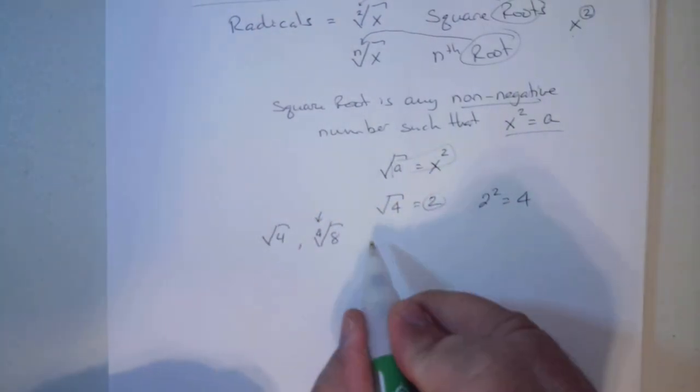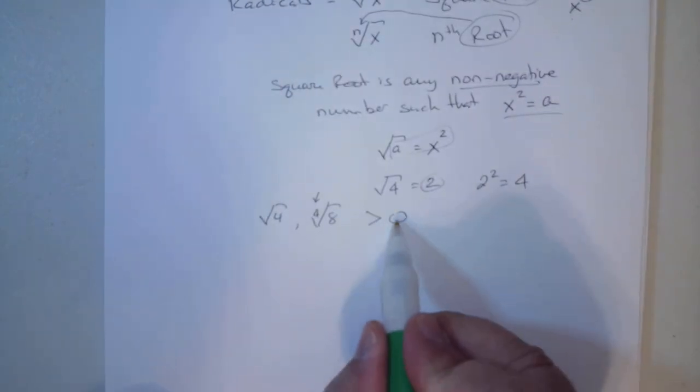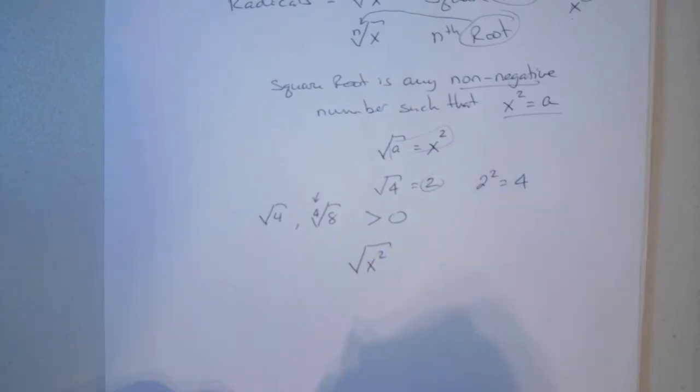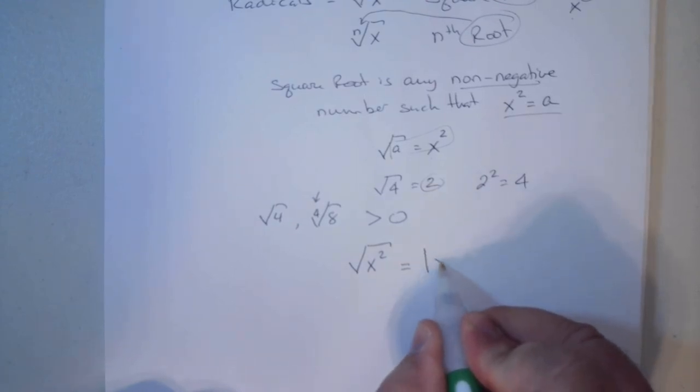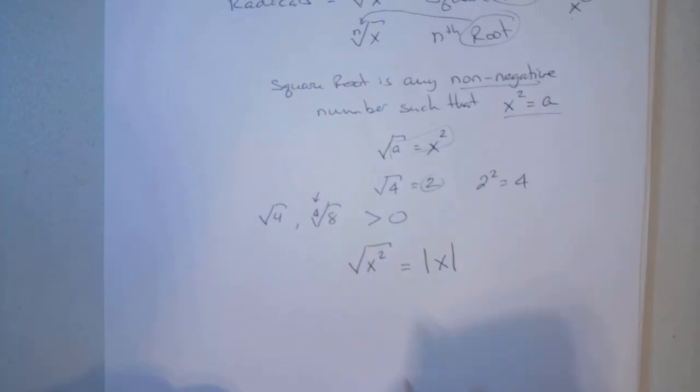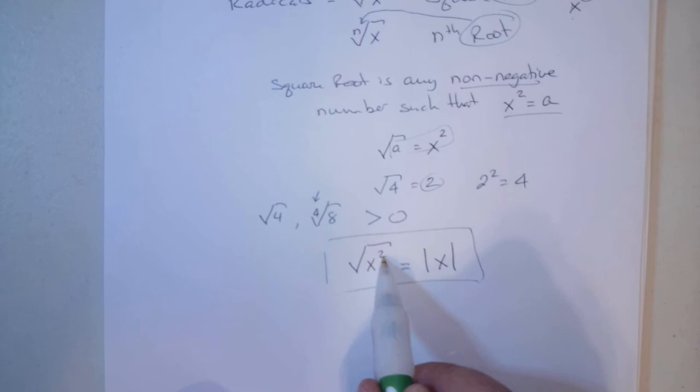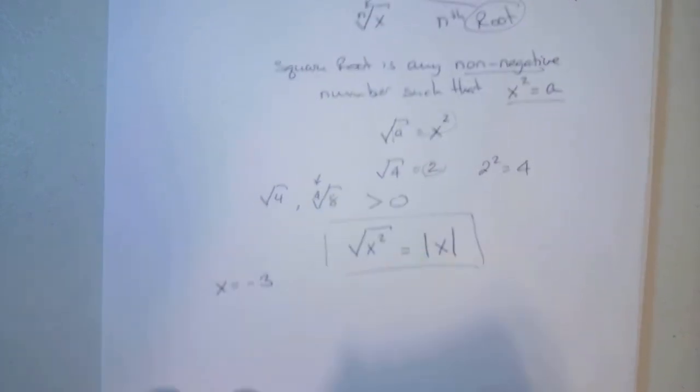the answer will always come out to be positive. We have another process in mathematics that always gives us a positive answer. The square root of x squared is the same thing as the absolute value of x.